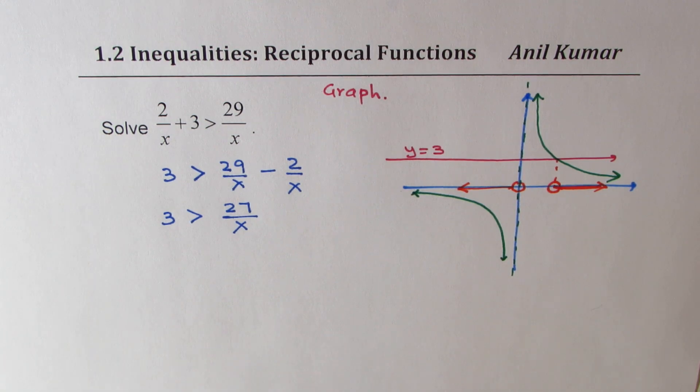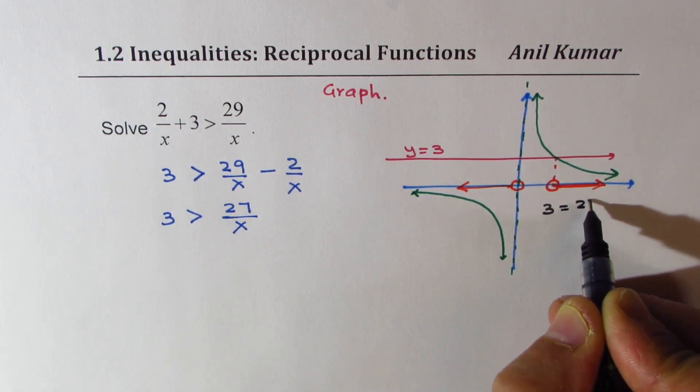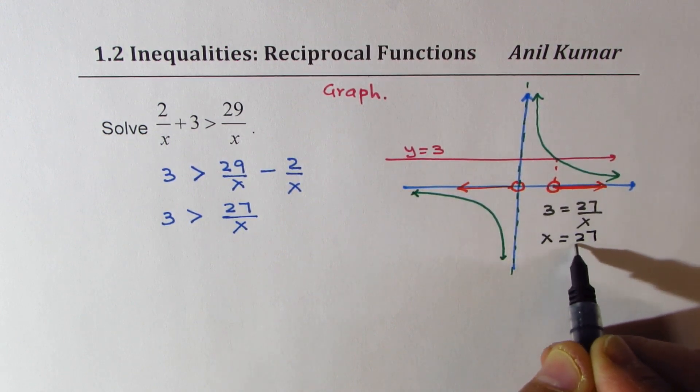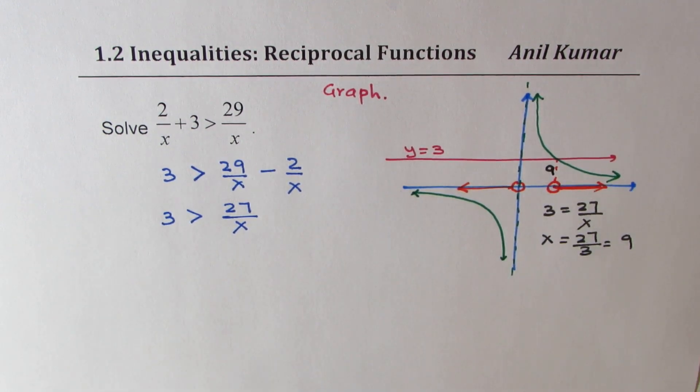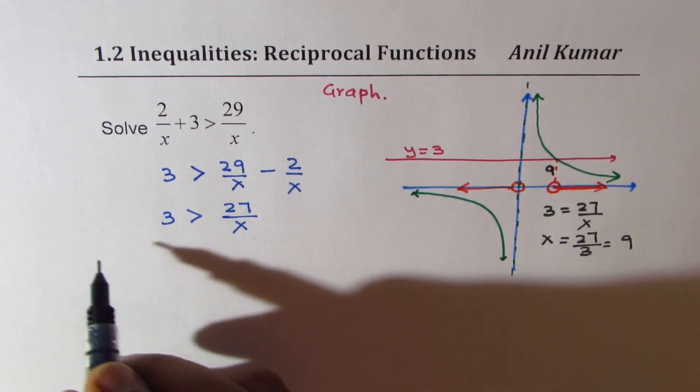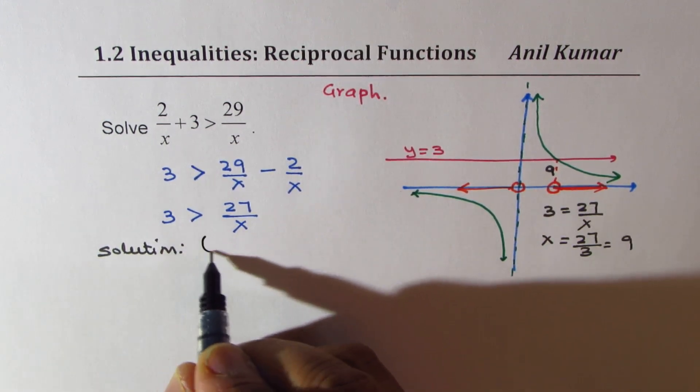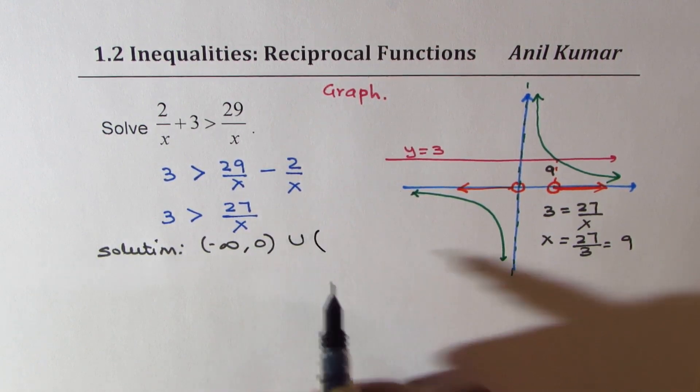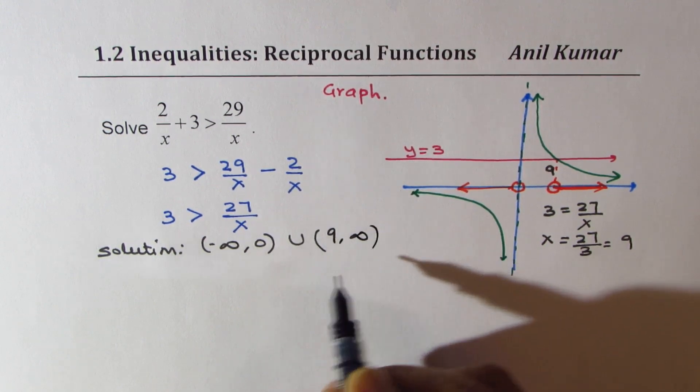Now when are they equal? We can solve for it. When is 3 = 27/x? Well, that gives us x = 27/3, which is 9. So this point is 9. Once we know this is 9, we can say that the solution is from minus infinity to 0, union from 9 to plus infinity. So this is a very straightforward method.